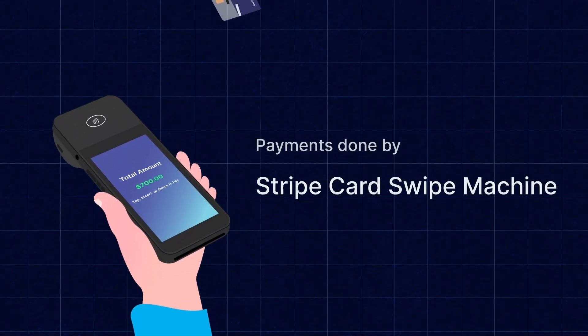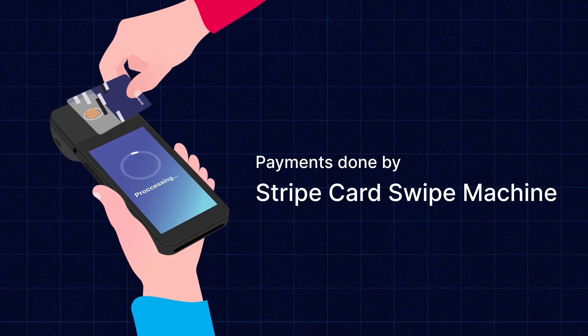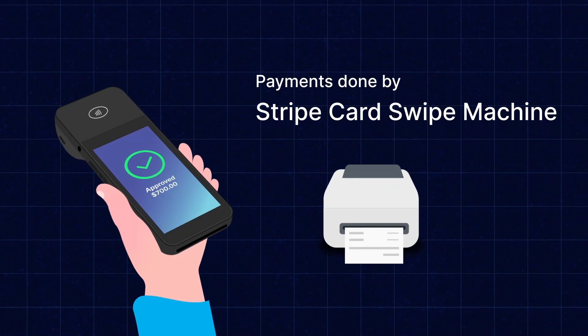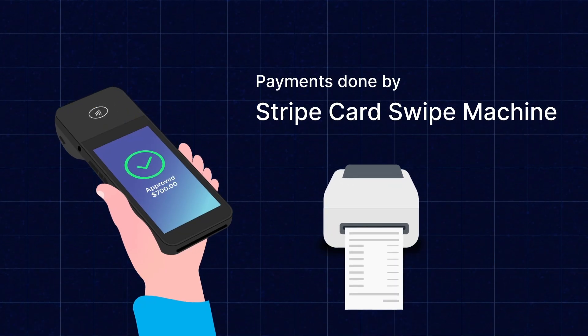This is a great way to accept cards in your store. In order to do so, you need to integrate the WooCommerce POS terminal connector with your store. With this powerful integration, the POS agent can make payments by Stripe Card Swipe machine and can generate the order receipt from the device.